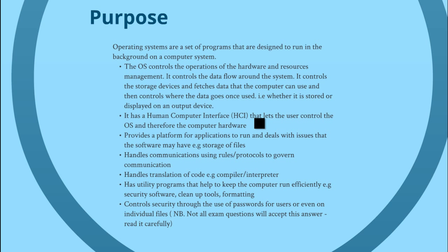The OS controls the operations of the hardware and resource management. It controls the data flow around the system, controls the storage devices, fetches data the computer can use, and then controls where the data goes once used - whether it is stored or displayed on an output device. So the operating system controls all the hardware and manages all the resources within the computer.